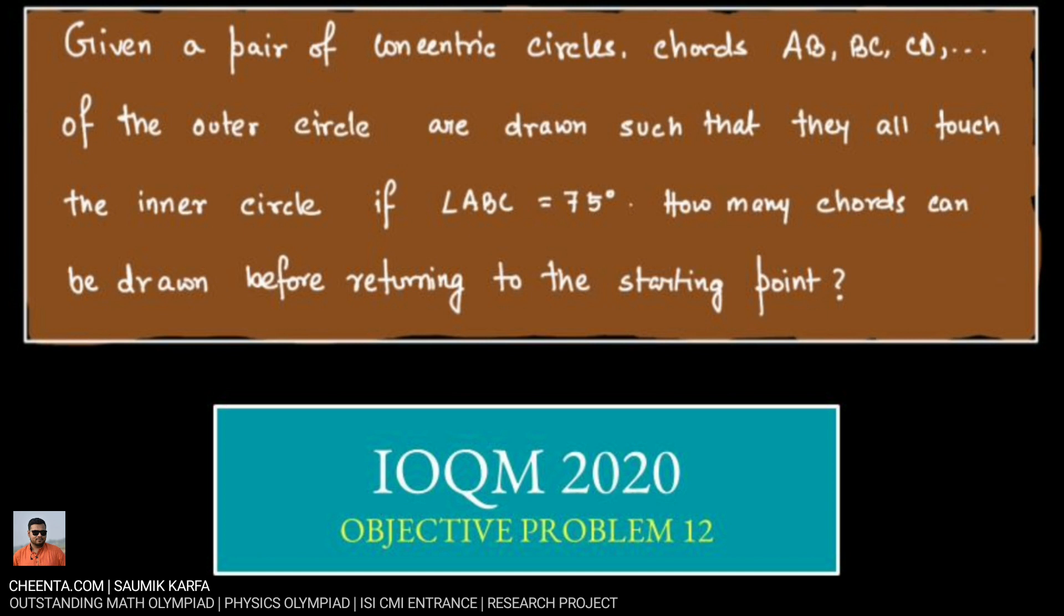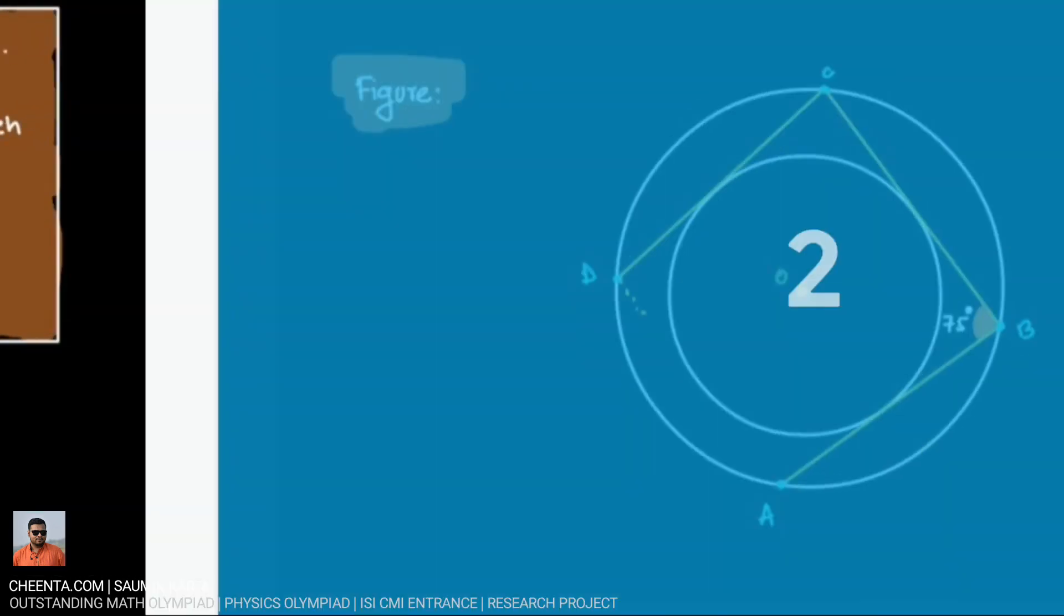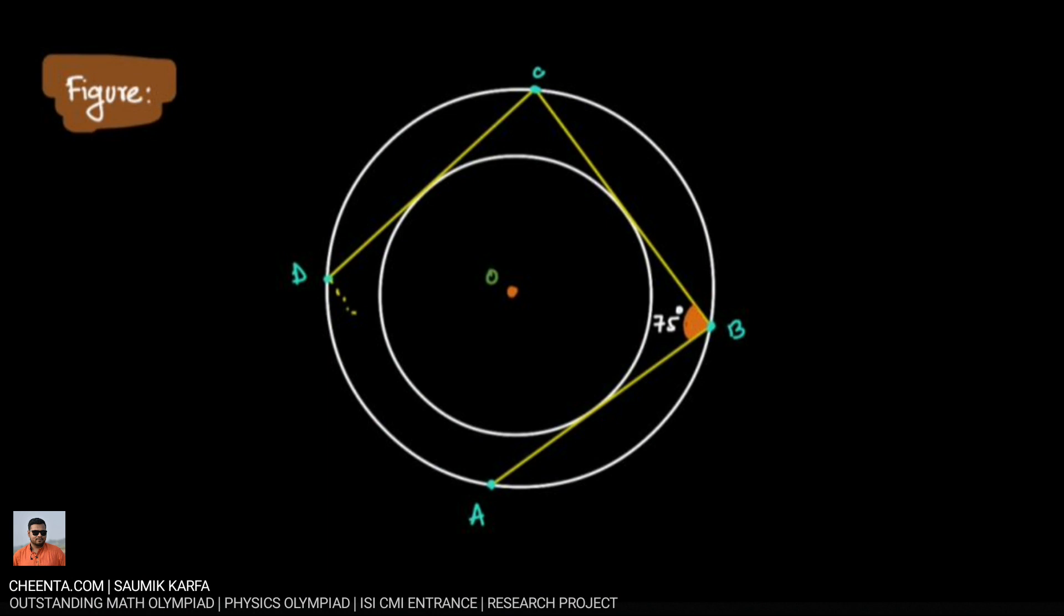I'll try to explain it with the diagram. So this is the diagram here. We are given two concentric circles centered at O and we are drawing the chords A, B, C, D and so on of the outer circle which are tangent to the inner circle and we will continue drawing these chords till we come back to the point where we started.